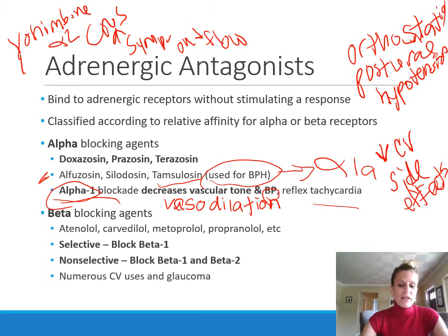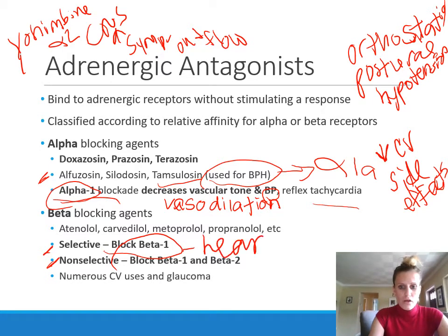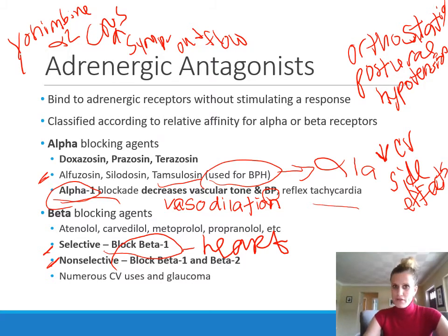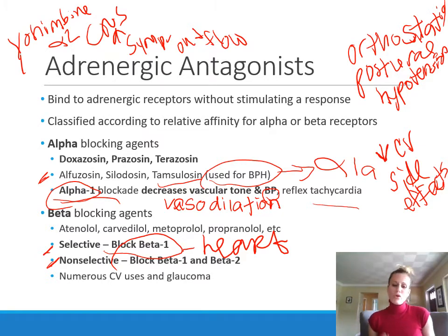Beta blocking agents can be classified as selective or non-selective. Selective agents block only beta-1 receptors, which are found on the heart. Non-selective agents block both beta-1 and beta-2 receptors. Beta-2 receptors, found in the lungs, are stimulated for bronchodilation, so blocking them can lead to bronchoconstriction — which is a major issue in patients with pulmonary conditions like asthma or COPD.